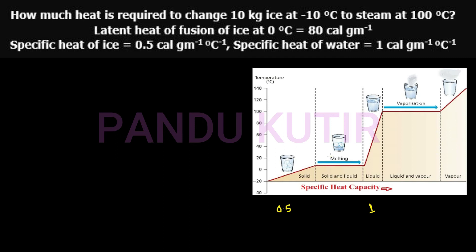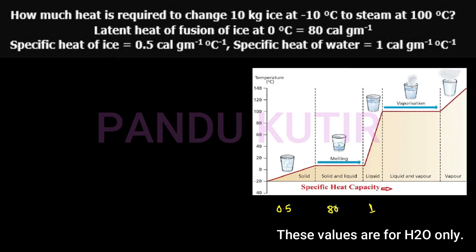This is a phase change — from liquid phase to another phase. The liquid phase transitions to vapor. This is related to Q4 and the latent heat of vaporization. The value of the latent heat of vaporization is 540 calories per gram.